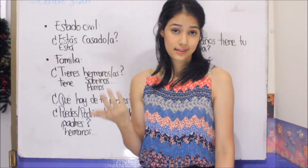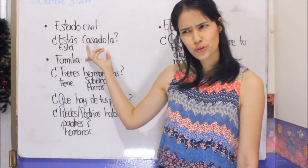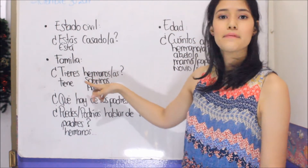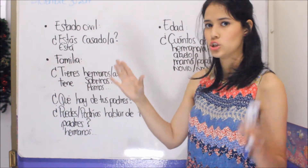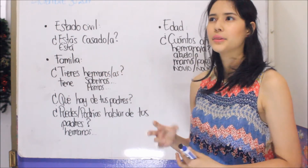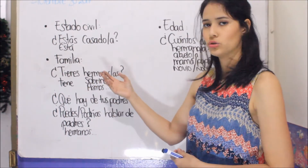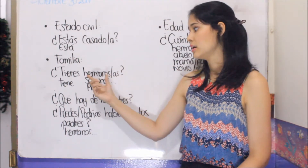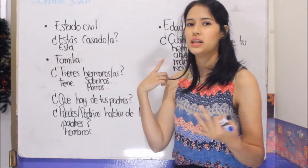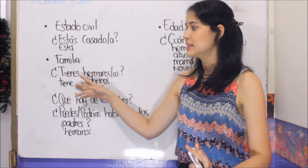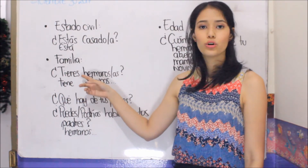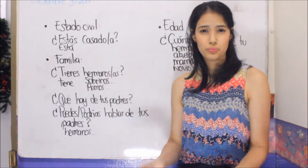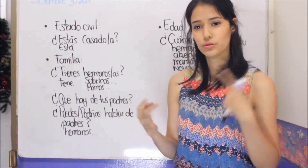You can ask '¿Estás soltero o soltera?' for single. To ask about family there are many questions we can ask in Spanish. For example, 'do you have brothers?' — in Spanish it's shorter: '¿Tienes hermanos?' The word 'hermanos' covers siblings in Spanish. You can also say: '¿Tienes sobrinos?', '¿Tienes primos?', '¿Tienes abuelos?', '¿Tienes novia?', '¿Tienes novio?' — whatever applies. And here the same formal/informal distinction applies: 'tienes' vs 'tiene'. You can also say '¿Qué hay de tus padres?', 'tus hermanos', 'tus sobrinos', 'tus tíos', 'tus abuelos', 'tu novio', 'tu novia' — whatever you want.